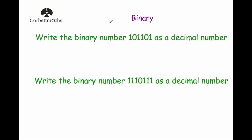For the binary number 101101: writing the place headings 1, 2, 4, 8, 16, 32 above it — we have a 1 in the 1s, a 1 in the 4s, a 1 in the 8s, and a 1 in the 32s. So we add 1 + 4 + 8 + 32 = 45. So 101101 in binary is the decimal number 45.